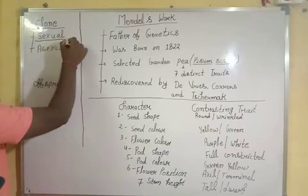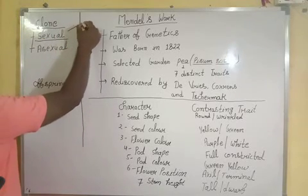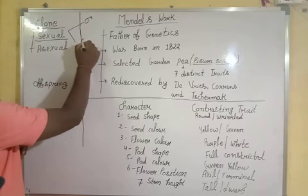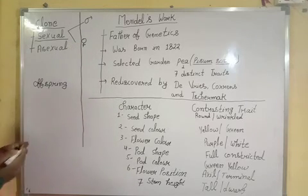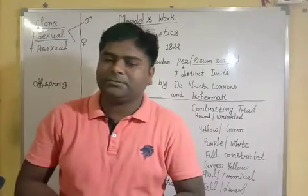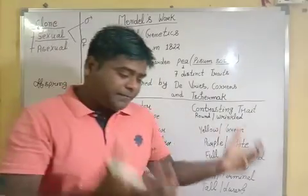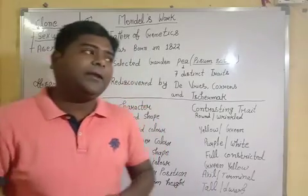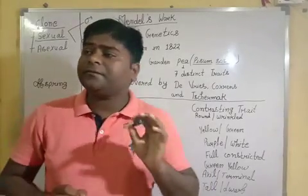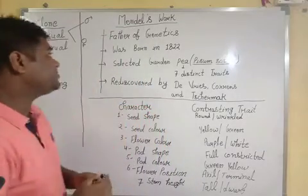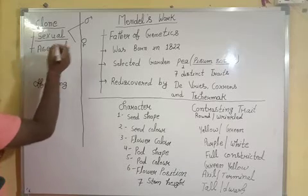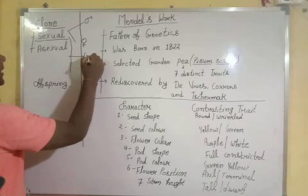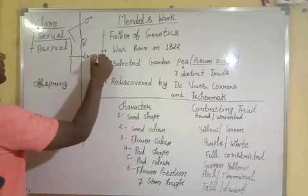Whenever we have sexual reproduction, two partners are there — male and female. They have the process of gametes formation. The gametes fertilize and then we have the formation of zygotes. Whenever we have gametes formation, there is a very important process known as crossing over.